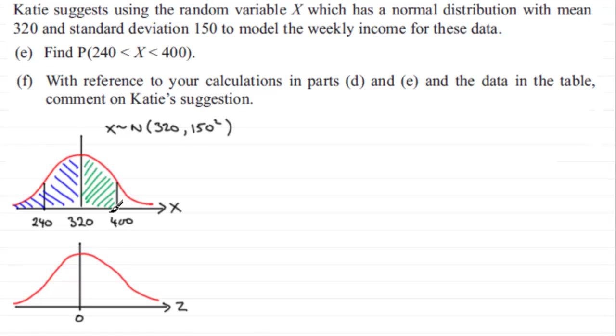If I project my value for 400 back down onto the standardized graph, I'm going to need to work out this value here which I'm going to call z1.